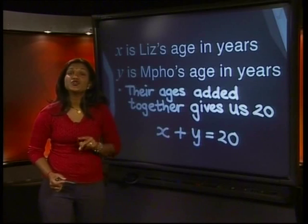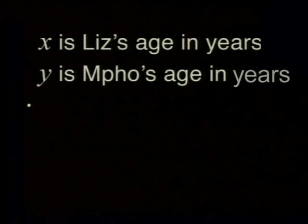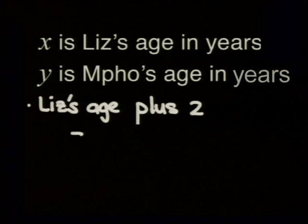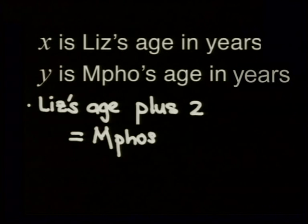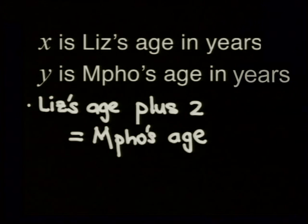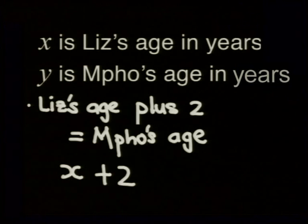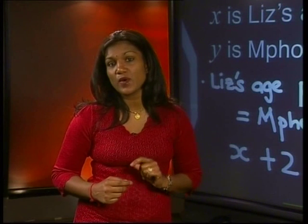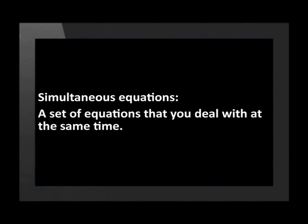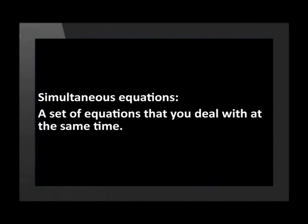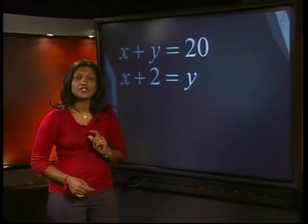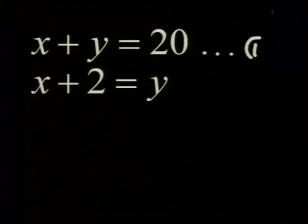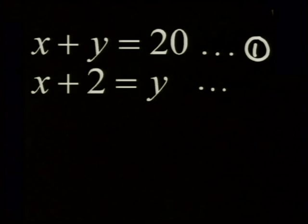And we know that Mpo is two years older than Liz. We can write that Liz's age plus two is equal to Mpo's age, meaning X plus 2 is equal to Y. Now I want to take a moment to explain what we mean by working with simultaneous equations. Simultaneous equations are a set of equations that you deal with all at once or at the same time. So we can call X plus Y equals 20 our first equation, and X plus 2 equals Y our second equation.